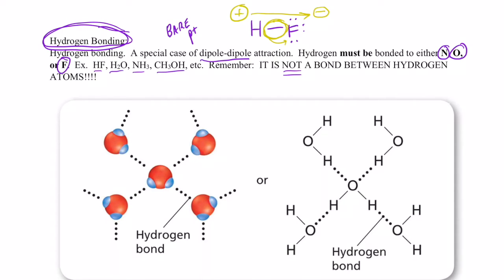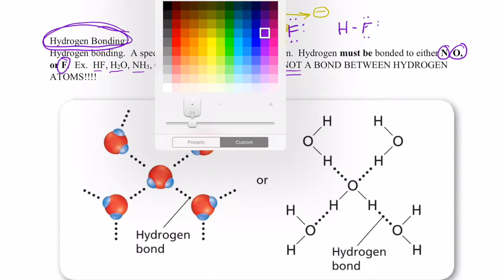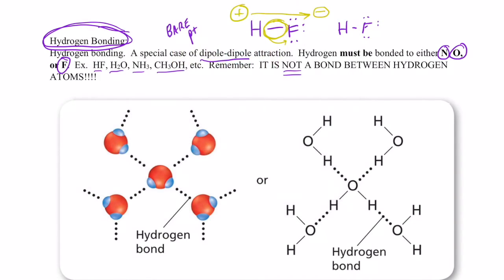If another hydrogen fluoride molecule was nearby, you can see that they would line up with the positive end of that hydrogen aligning with the negative end of the neighboring fluorine. That is called a hydrogen bond.